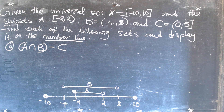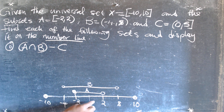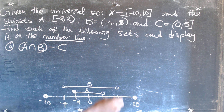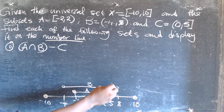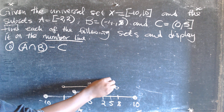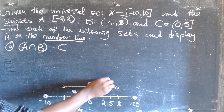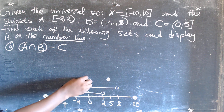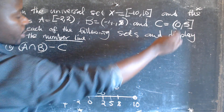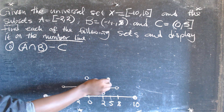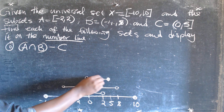We can also find set C. Set C goes from 0, which is between negative 2 and 2, to 5, which is between 2 and 8. In this case 5 is part of the set (closed), but 0 is not part of the set (open). So we open it at 0, showing that 0 is not part of the set. This is going to be set C.